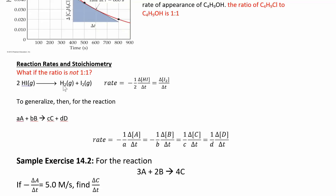Let's look at this reaction: we have 2 HI, and two moles of this are going to decompose to make one mole of H2 and one mole of I2. So the rate at which the reactant is decreasing is going to be twice as fast as the rate of appearance of the products.